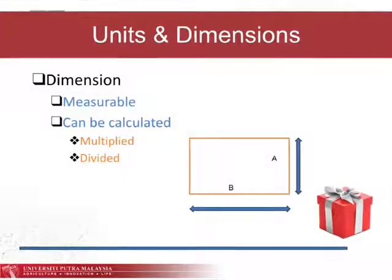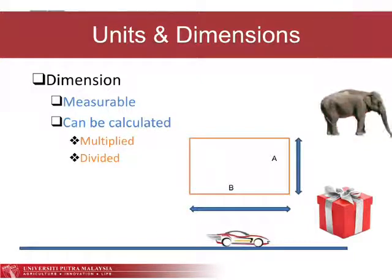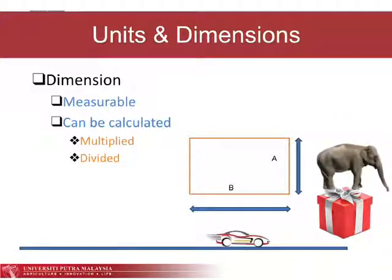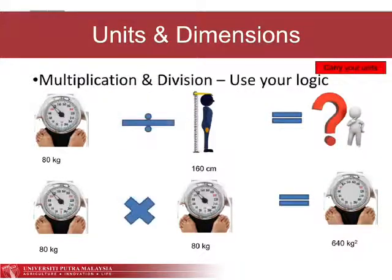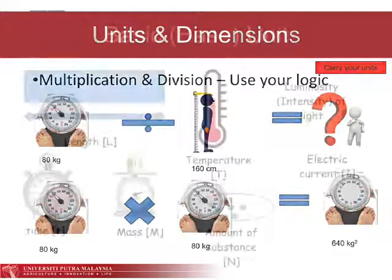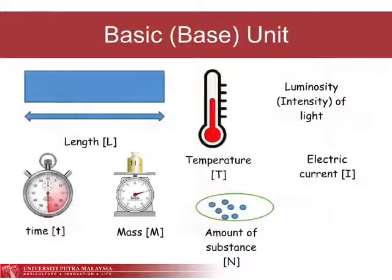A measured or counted quantity has a numerical value, which is the magnitude, and a unit, which is a character of the measured values. Just remember, treat units like quantities. Units have to be the same when you perform addition or subtraction, but they can differ if you perform multiplications or divisions. The units can cancel each other, or they can stay if they are different.